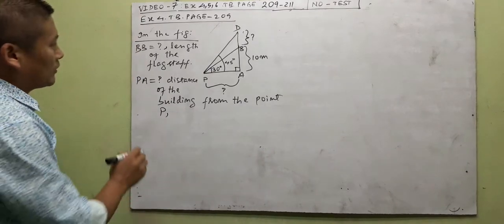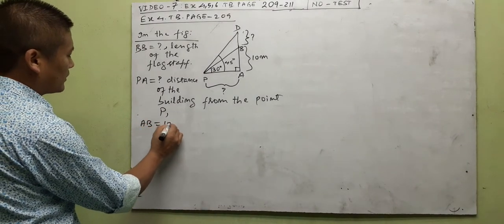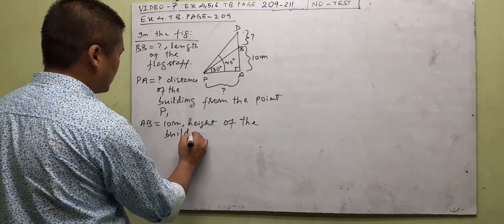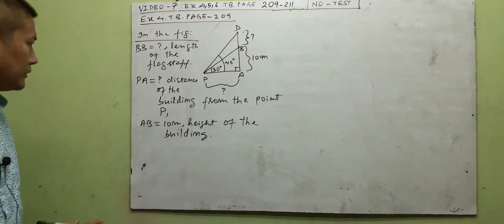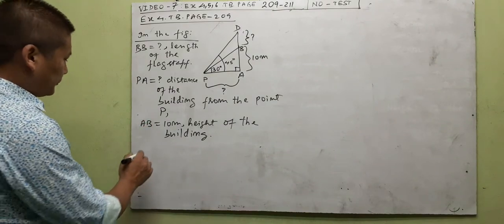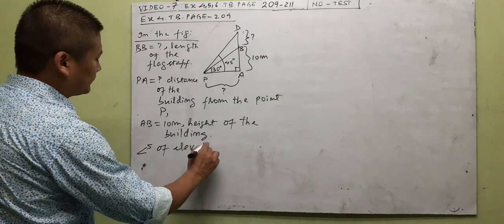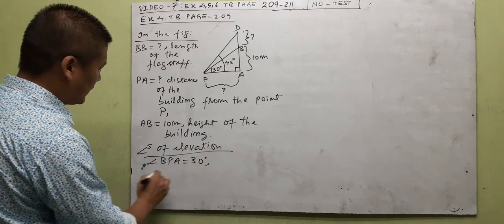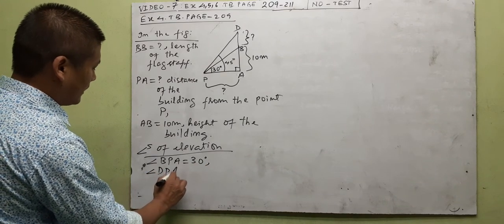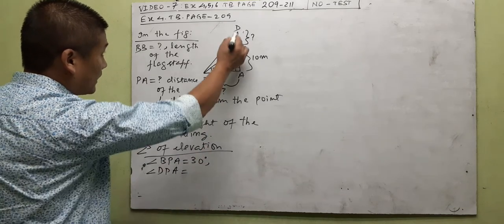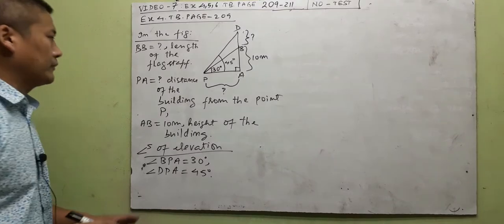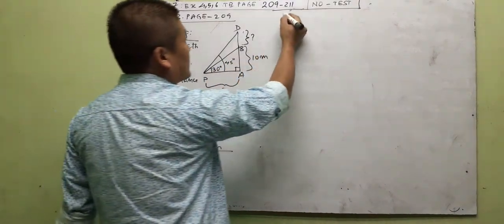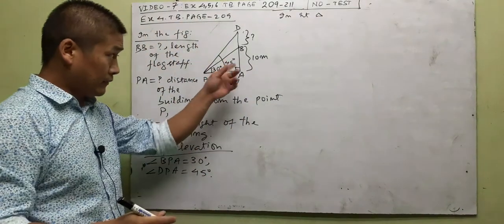Let's do this slowly so you understand it properly. There are two angles of elevation: angle BPA equals 30 degrees (elevation to the top of the building), and angle DPA equals 45 degrees (elevation to the top of the flagpole). With this we find the flagpole length and distance. In right triangle PAB, we have one side, so it's easy to find any other side. We can start with that.